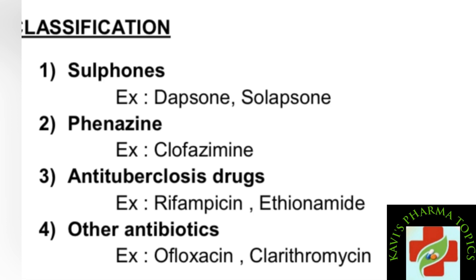To summarize, the four classifications of anti-leprotic drugs are: sulfones (dapsone, solapsone), phenazines (clofazimine), anti-tuberculosis drugs (rifampicin, ethionamide), and other antibiotics (ofloxacin, clarithromycin).